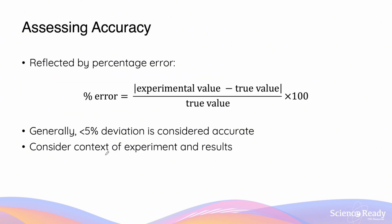Accuracy of results can only be assessed if we know the theoretical, true, or accepted value of the experimental measurements. When assessing accuracy, a very common approach is calculating the percentage error, which is the absolute value of the difference between the experimental value and the true value, divided by the true value, multiplied by 100 to get a percentage.